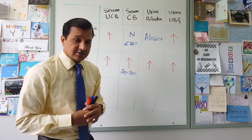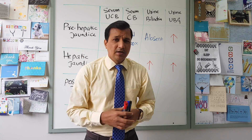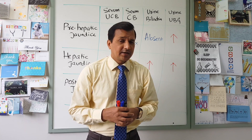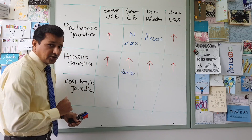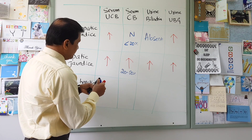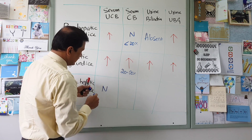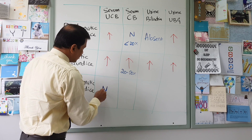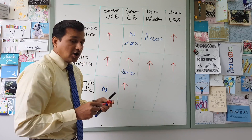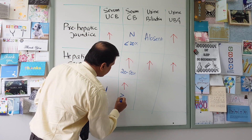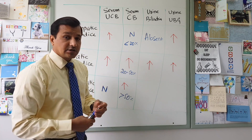Moving to post-hepatic jaundice. Common causes include obstruction of the common bile duct by a stone, carcinoma of the head of the pancreas, or intra-hepatic biliary obstruction. In post-hepatic jaundice, unconjugated bilirubin is not really elevated — it is essentially normal, at least initially. Conjugated bilirubin is elevated and contributes more than 50% of total bilirubin in post-hepatic jaundice.